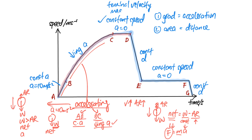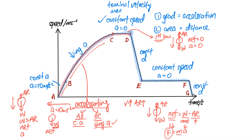From C to D, the skydiver is falling at maximum constant speed — terminal velocity. Because it's moving at constant speed, by Newton's first law the forces are balanced, net force is zero, and acceleration is zero. As the skydiver went faster and faster, air resistance increased until it became equal and opposite to the weight. With net force zero and acceleration zero, the skydiver continues moving downward at this maximum constant speed.